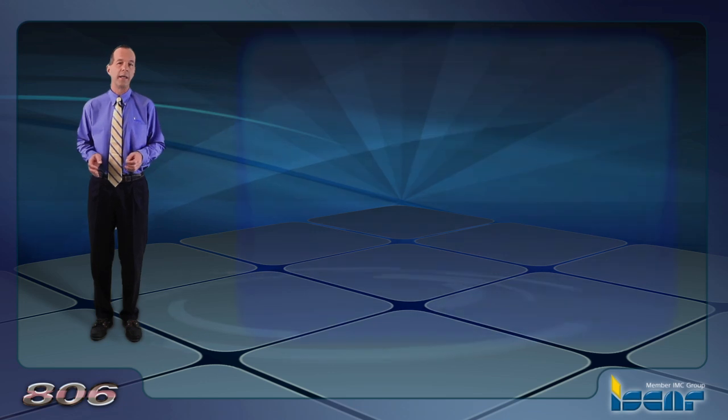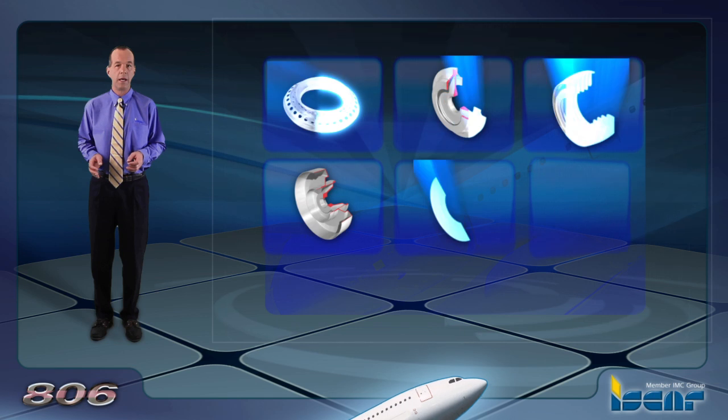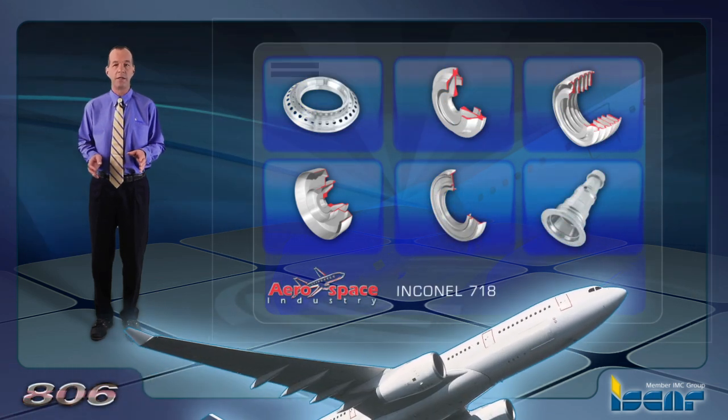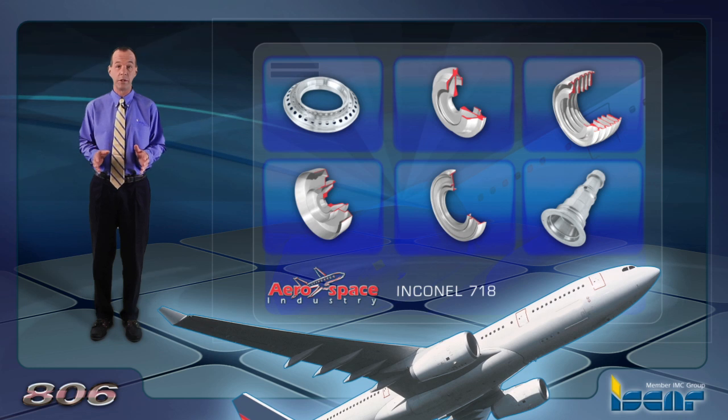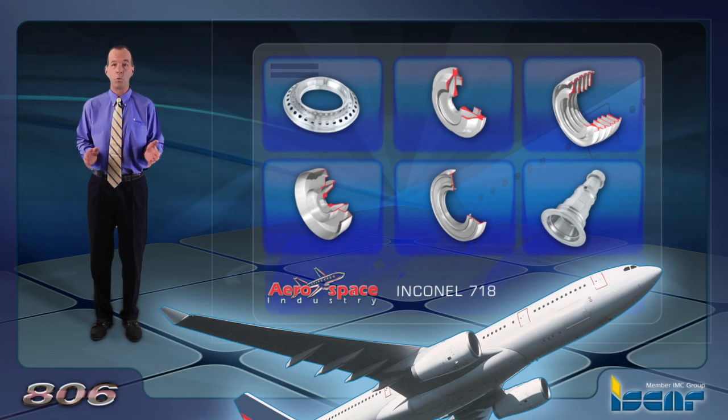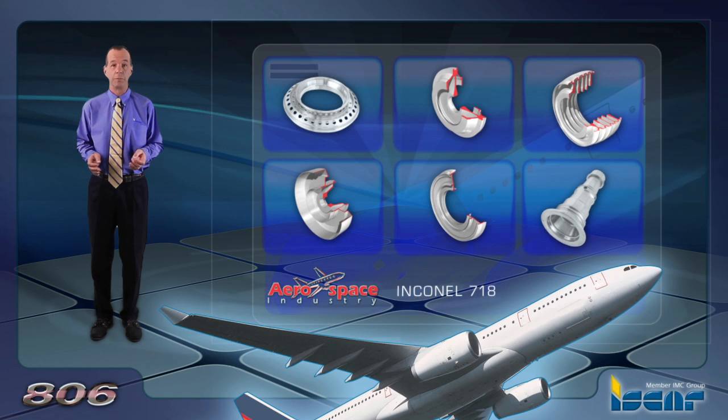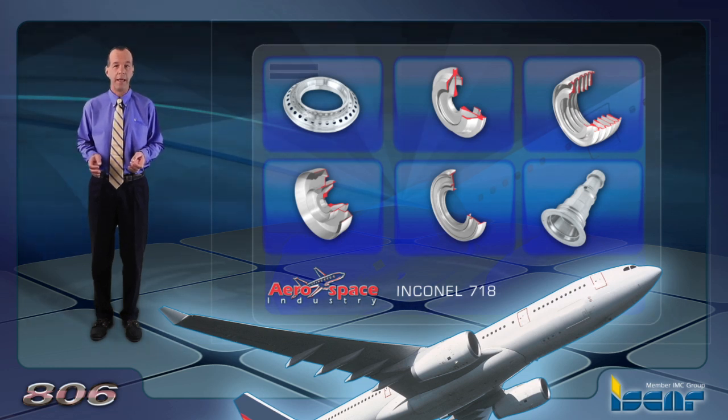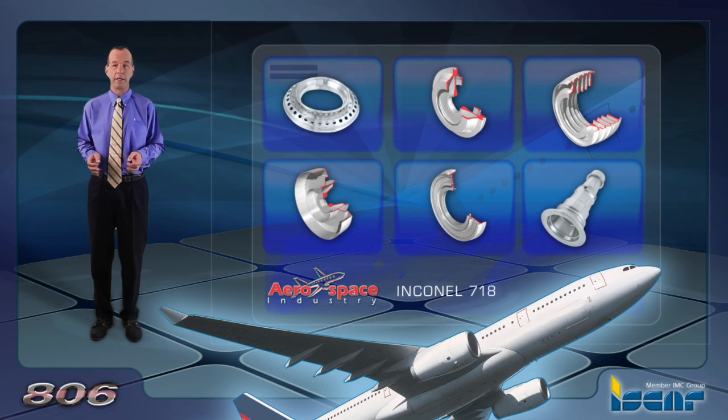Inconel 718 belongs to a family of nickel-based super alloys, which are used extensively for applications where withstanding high temperatures and high corrosion resistance is required. It is used widely in the aerospace industry and components which are placed in the hot section of the engine and in additional sectors of the oil industry.